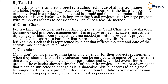Calendar: many don't consider scheduling tasks on a calendar for their project requirements when they should. Most calendars can be curated with names of their own. You can create one calendar per project and schedule events for that project. The calendar shows a timeline for the entire project. The major advantage is that it can be subjected to changes as it is shared. While it seems to be a great technique for tracking a project, it does have certain limitations — you cannot assign tasks to certain people and you cannot see the task dependencies. For example, giving an entire calendar of a course of study for a particular subject is an example of this.